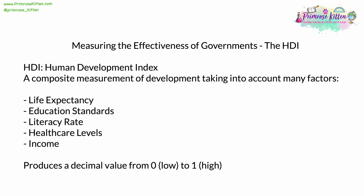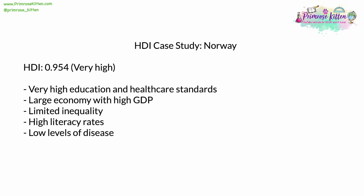Norway is a useful case study, having currently almost the highest Human Development Index at 0.954, regarded as very high. Norway has extremely high education and healthcare standards, aided by the fact that it has a low population spread over a large area. This means it has a large economy based around natural resources and the service sector, giving it a high GDP. Inequality is very limited in Norway as a result of high taxation on high earnings. The high education standards result in very high literacy rates approaching 100%, and there are low levels of disease due to a proficient healthcare system, which further increases the HDI.